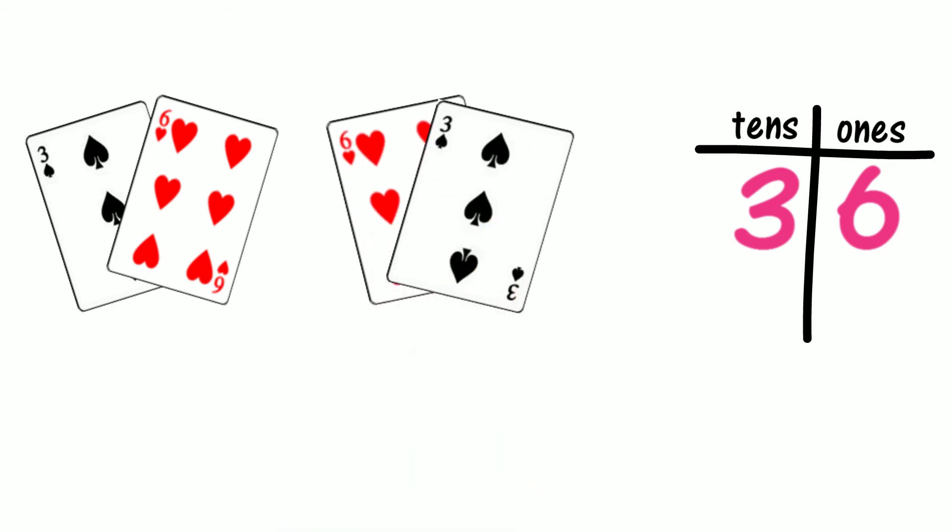Let's swap the places of the two cards to make another two-digit number. What number did we make? Did we make 63? Let's record 63 in the place value chart. How could we describe 63 using standard place value? Is 63 six tens and three ones? Are 36 and 63 the same number? Why not? Is 36 three tens and six ones, and is 63 six tens and three ones?